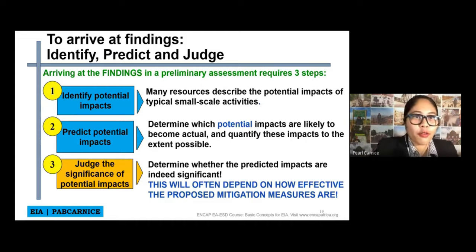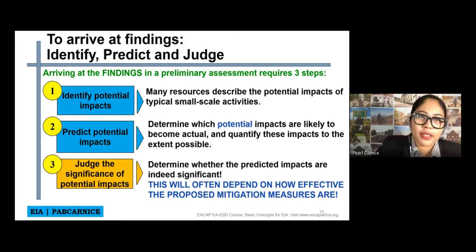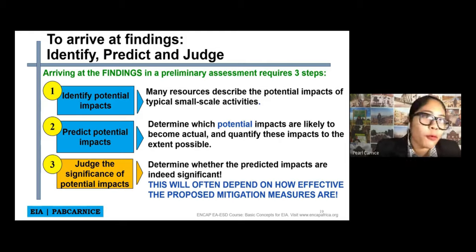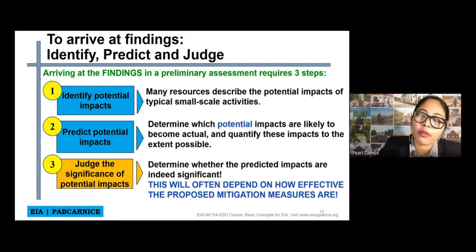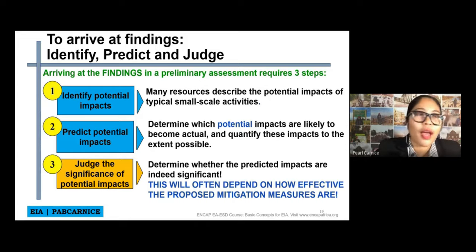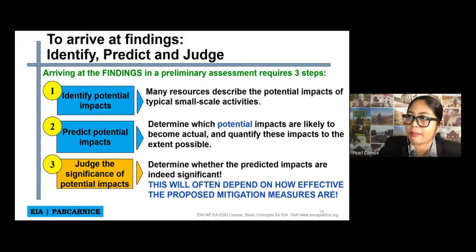There are three steps. First step is identify potential impacts. Second is predict potential impacts. And third, judge the significant potential of impacts. When we say identify potential impacts, there are resources that describe potential impacts of typical small-scale activities. In predicting potential impacts, we determine which potential impacts — possible impacts that are likely to become actual, that will or might happen as we conduct our proposed project or activity — and quantify these impacts to the extent possible.